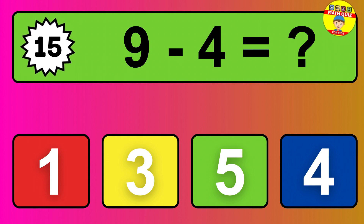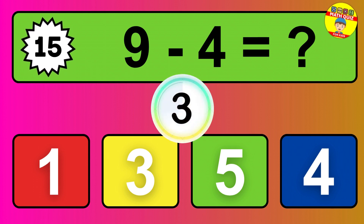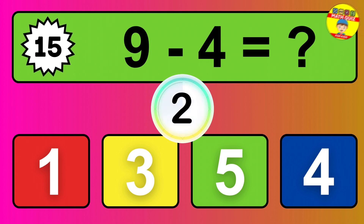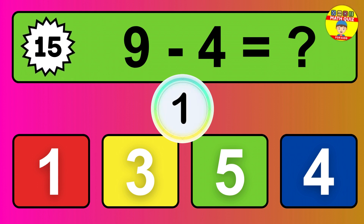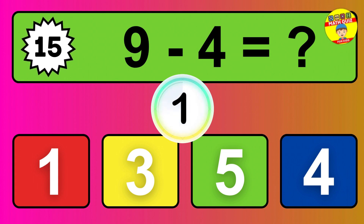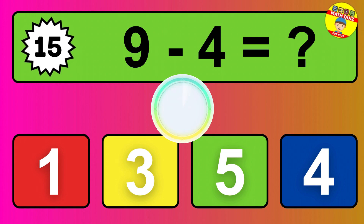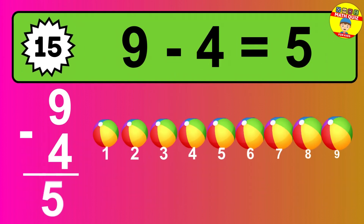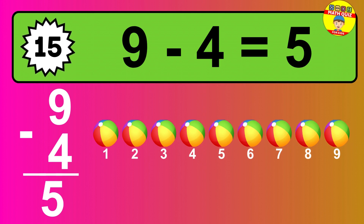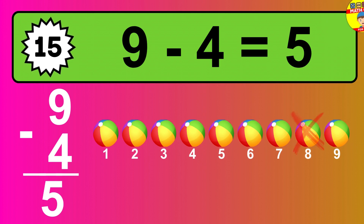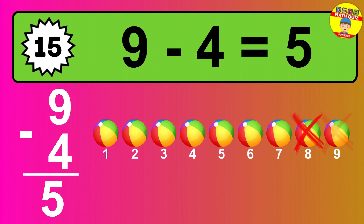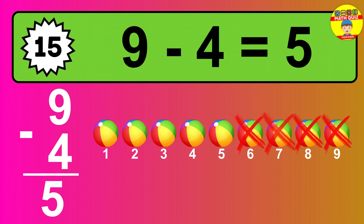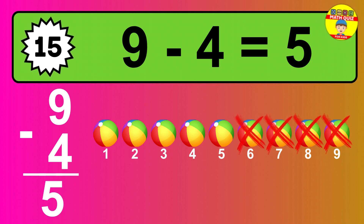Question 15: 9 minus 4 equals what? The answer is 9 minus 4 is 5. Let's count it: 1, 2, 3, 4, 5.